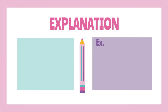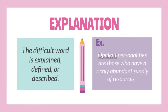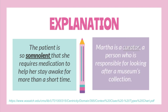The last type of context clue is explanation. The difficult word is explained, defined, or described. For example, 'Opulent personalities are those who have a richly abundant supply of resources.' A richly abundant supply of resources is the explanation for the word opulent. Next: 'The patient is so somnolent that she requires medication to help her stay awake for more than a short time.' The need for medication is described for the word somnolent, which means sleepiness. Also, 'Marta is a curator — a person who is responsible for looking after a museum's collection.' The word curator is defined and simply means manager.